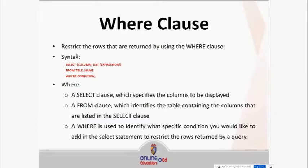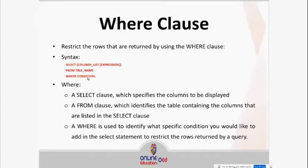The syntax for the WHERE clause starts with SELECT, followed by the column name. You can include expressions such as primary key, foreign key, null, is not null, and so on. Then you call the source of the table using FROM, followed by the table name. After that, you put the WHERE clause with your condition.